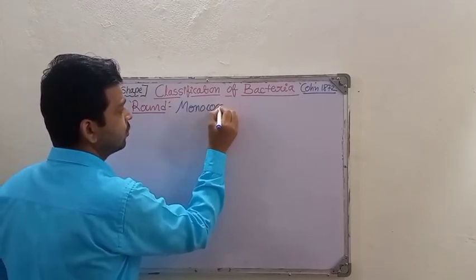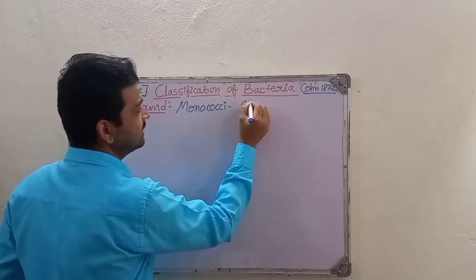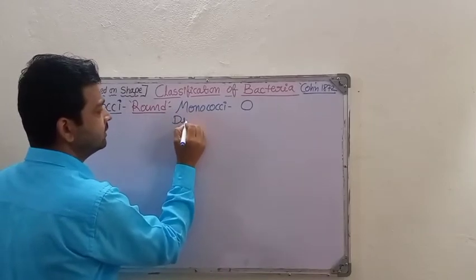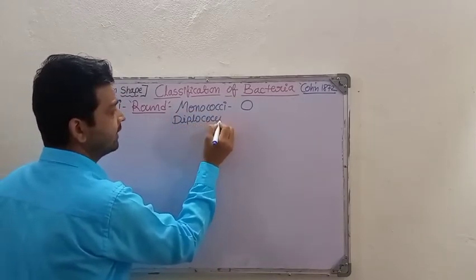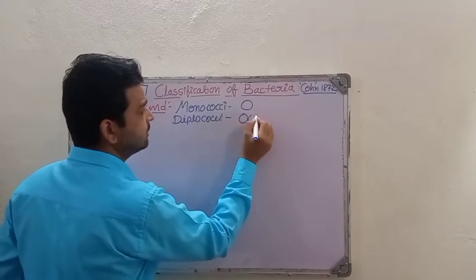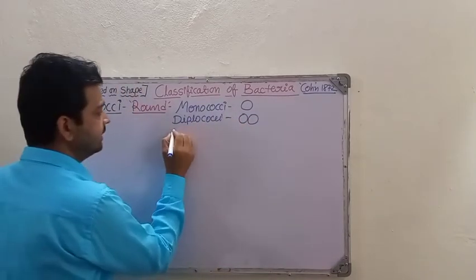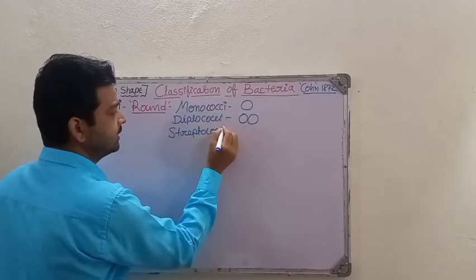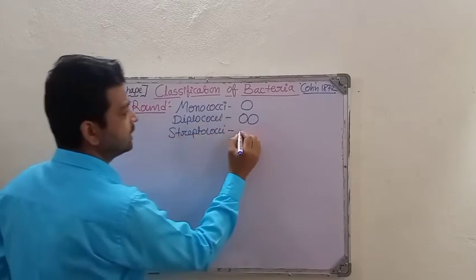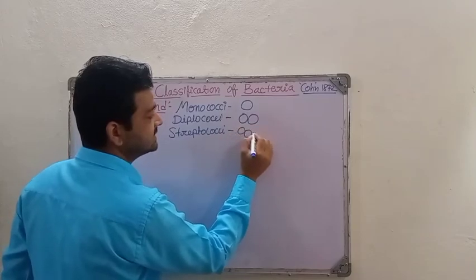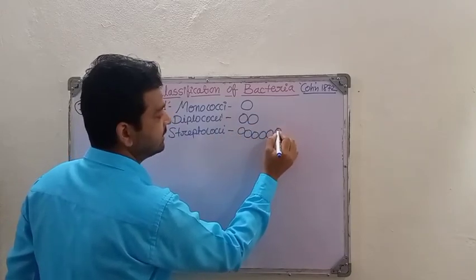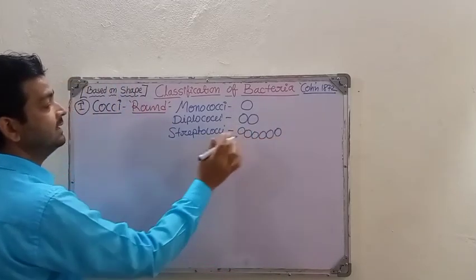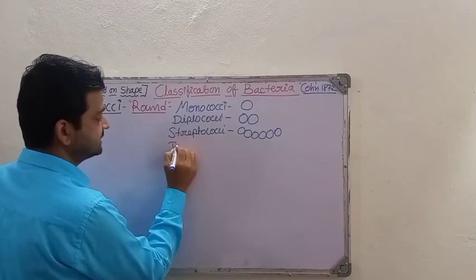Monococci means single round-shaped bacteria. The second type is diplococci, which means two round-shaped bacteria joined together. Then streptococci — when we talk about streptococci, they form a chain shape. The round-shaped bacteria join together and form like a chain.